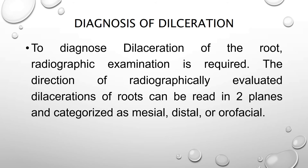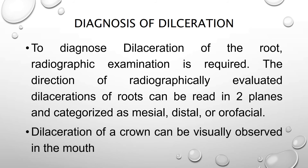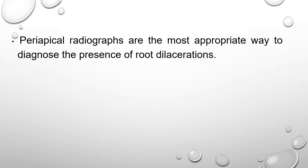Now, the diagnosis of dilaceration. To diagnose dilaceration of the root, radiographic examination is required. Basically, periapical radiograph is useful to detect dilaceration. The direction of the radiograph is evaluated in two planes and categorized as mesial, distal, or orofacial. Dilaceration of a crown can be visually observed in the mouth. When dilaceration is confined to the crown, it could easily be detected without a radiograph through visual examination.